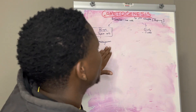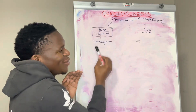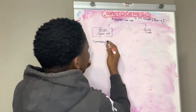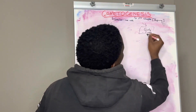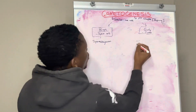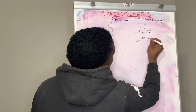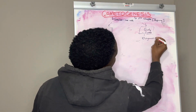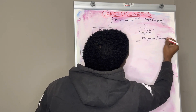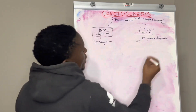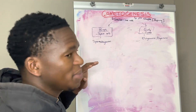Spermatogenesis means the beginning of the sperm cells — how does this happen? And for where the ovums begin, we are going to call it ovigenesis, or oogenesis. You can use either name.